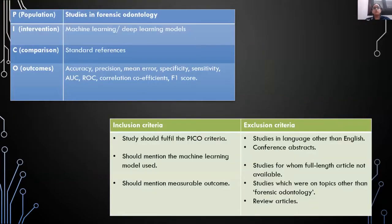The PICO defined for this study included all studies conducted in the field of forensic odontology in which machine learning or deep learning models had been used as an intervention, compared to standard references, and which had measurable outcomes in terms of accuracy, precision, mean error, specificity, sensitivity, AUC, ROC, correlation coefficients, and F1 score.